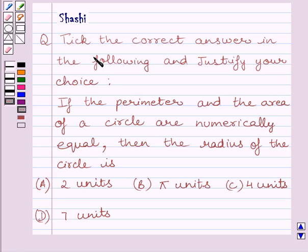Question says, tick the correct answer in the following and justify your choice. If the perimeter and the area of a circle are numerically equal, then the radius of the circle is: